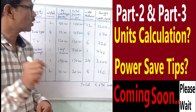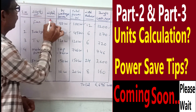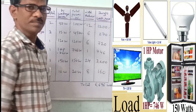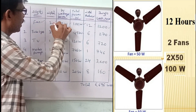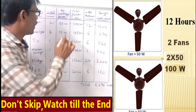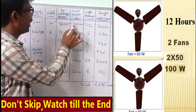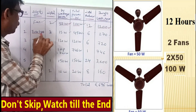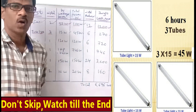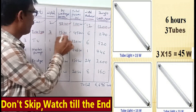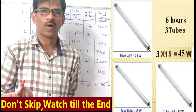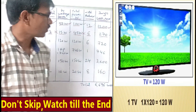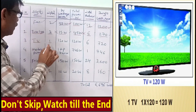Now let me form the table manually. For example: 2 fans — 1 fan is 50 watts, so total is 2 × 50 = 100 watts; 1 fan runs 12 hours. For tube lights: 3 tube lights, 1 tube light is 15 watts, so total watts = 3 × 15 = 45 watts; 1 tube light runs 6 hours, so total watt-hours = 45 × 6 = 270 watt-hours.